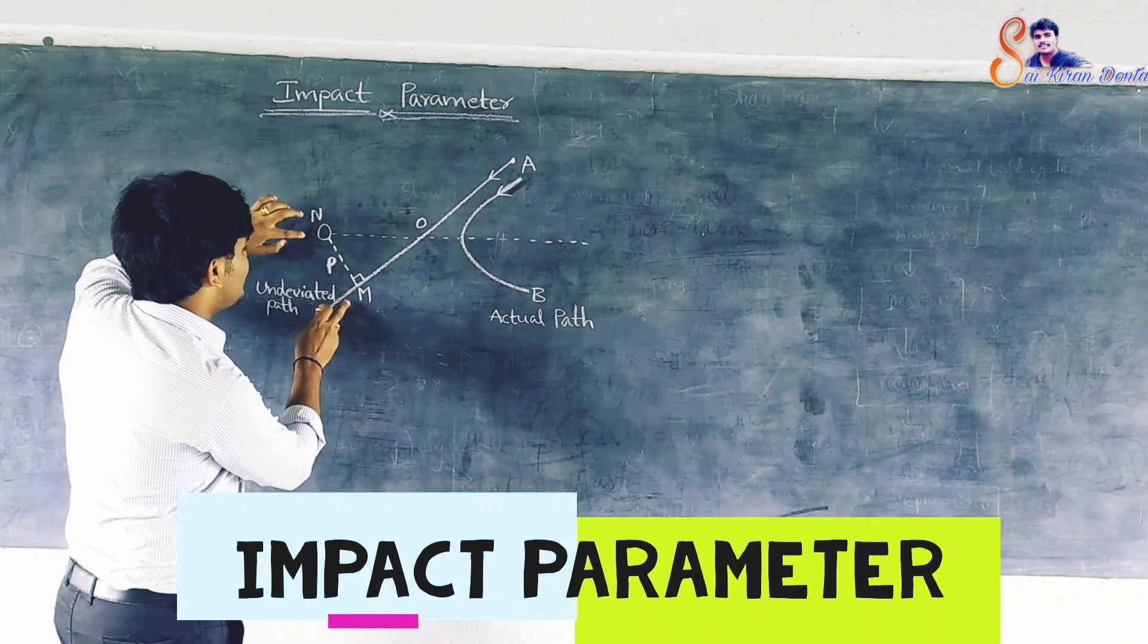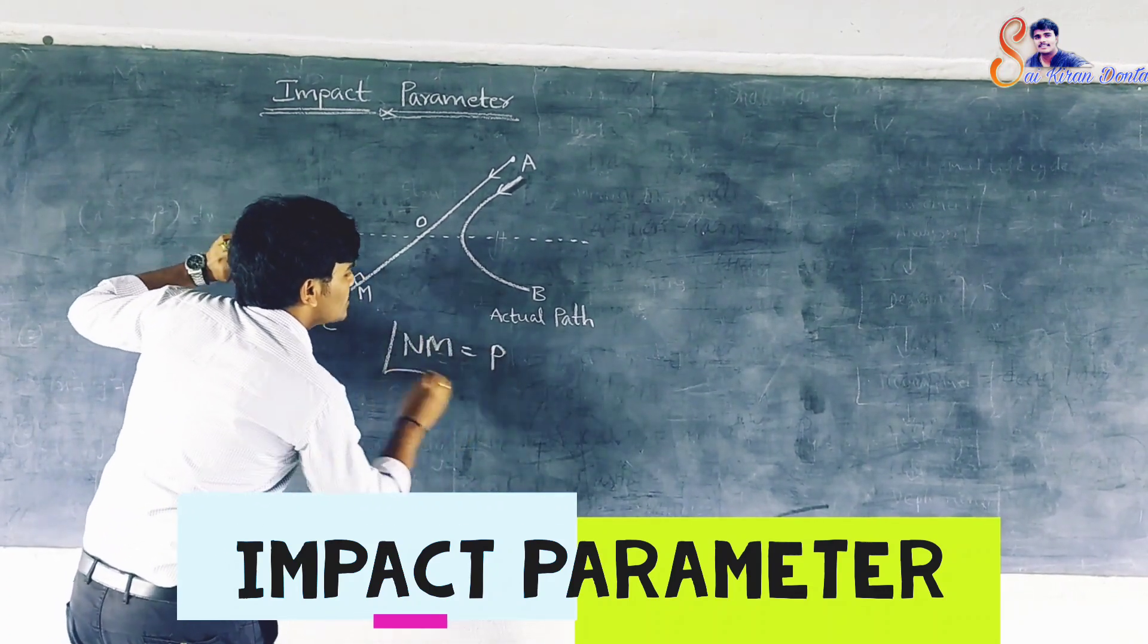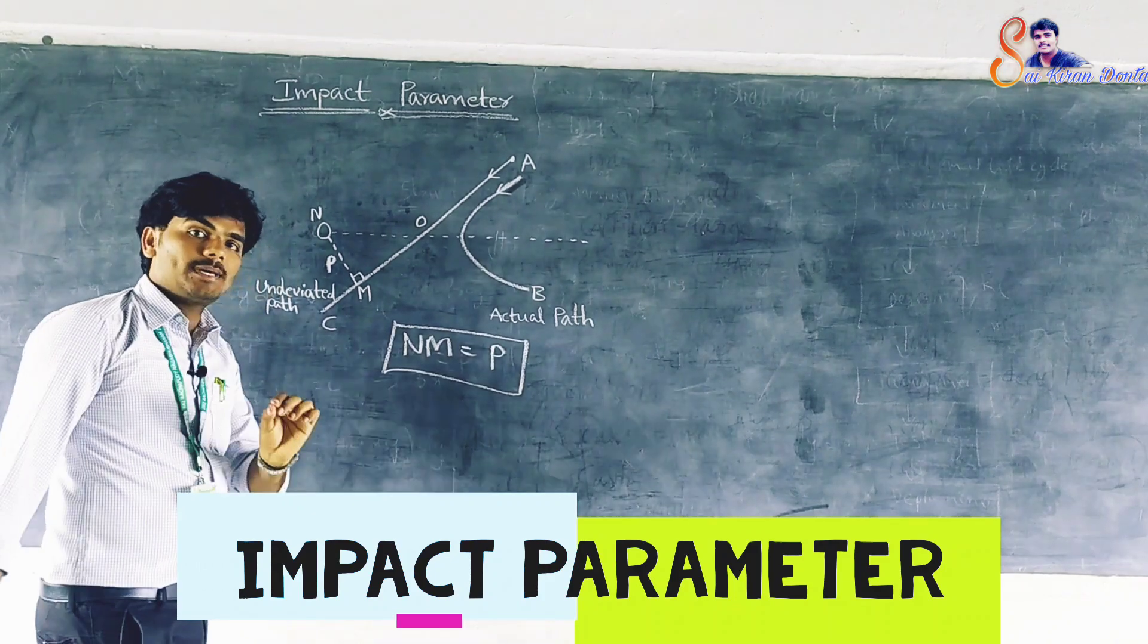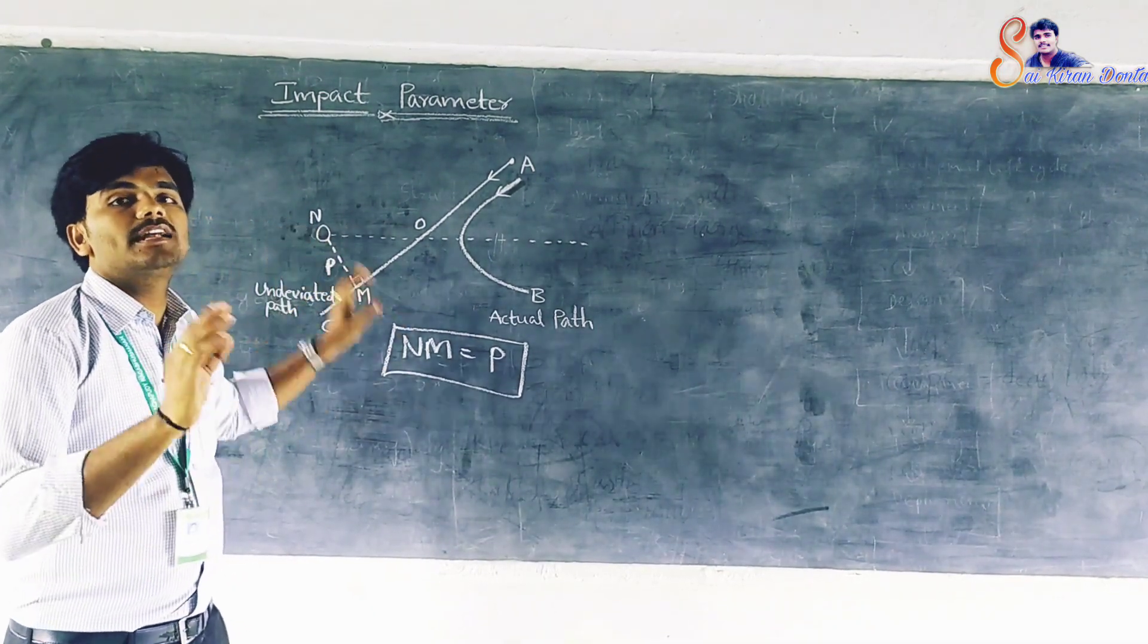Now, the distance Nm is equal to P is called impact parameter. So, ii distance ne manam impact parameter antunam.